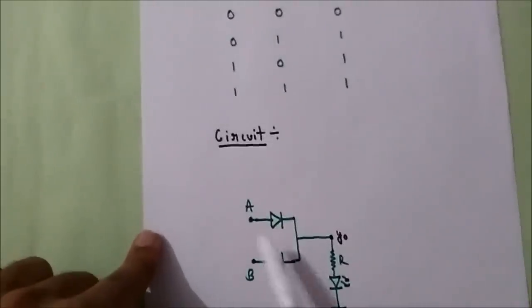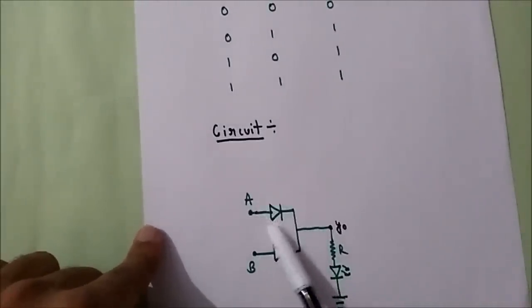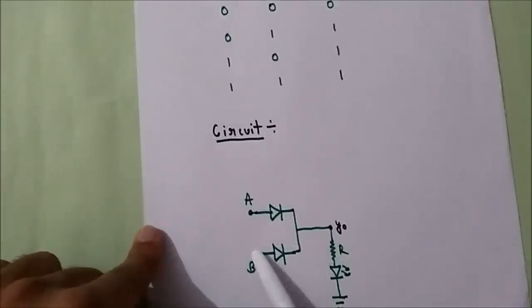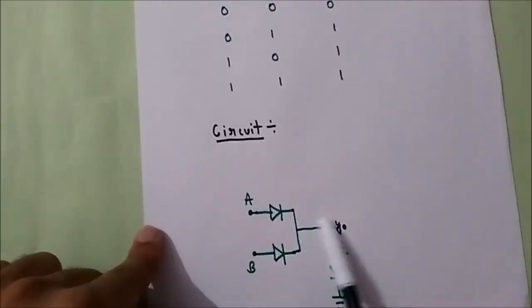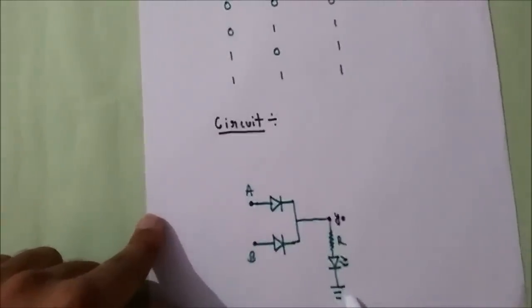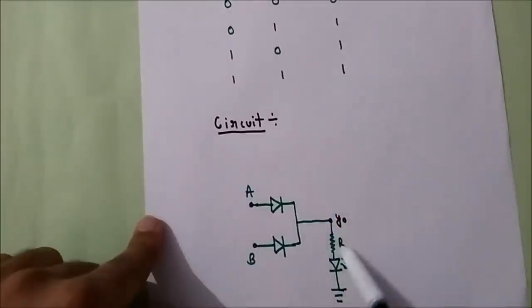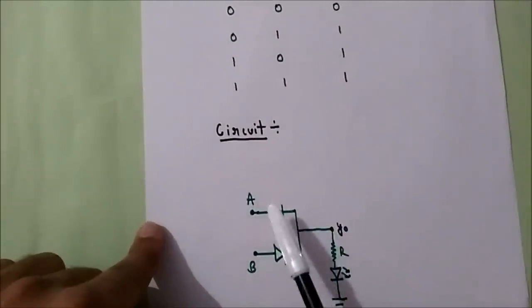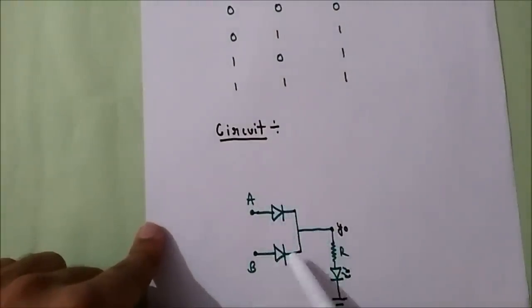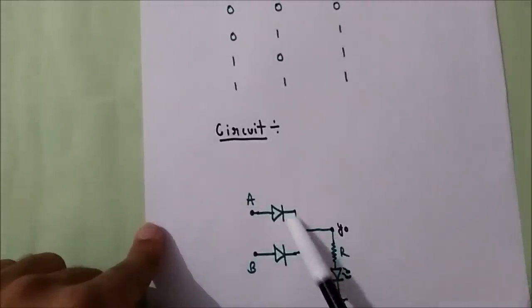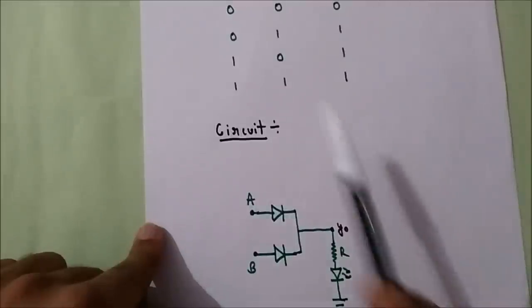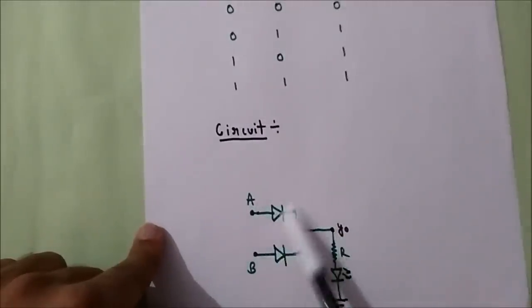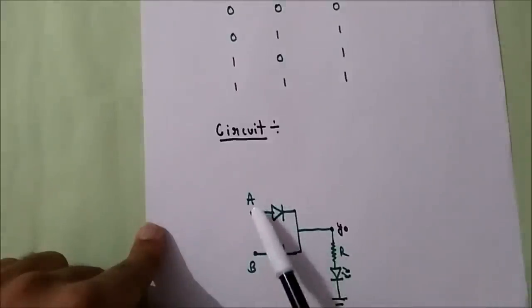If I give 0,1, that means this diode will act as open but this one will act as a short. So all the logic 1 will flow from here, through the resistor, through the LED, and to ground — meaning I'll get some voltage, so the output is 1. If I give 1,0, the same thing will happen — one diode is open, one is a short, so current flows and output is 1. In the case of 1,1, both diodes act as a short and current will flow through both diodes from A and B, then to the resistor, then to the LED, and to ground.